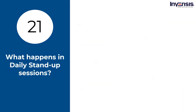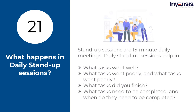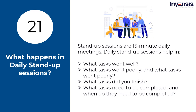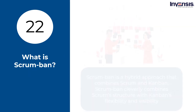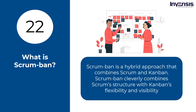What happens in daily stand-up sessions? Stand-up sessions are 15-minute daily meetings. They assist in determining what tasks went well and what tasks went poorly, what tasks were finished, what tasks need to be completed and when, and the team's stumbling blocks or any other project-related issues. The meeting helps in comprehending the project's overall scope and progress. What is Scrum Ban? Scrum Ban is a hybrid approach that combines Scrum and Kanban. It may be utilized to satisfy the demands of the team while reducing work batching and implementing a pull-based approach, cleverly combining Scrum structure with Kanban's flexibility and visibility.